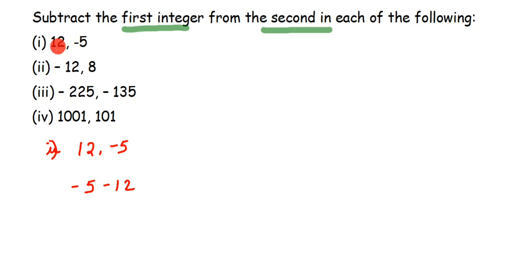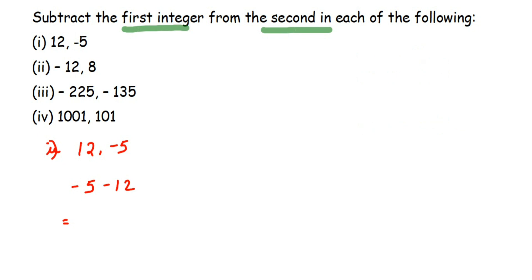Before we solve further, you need to know how to subtract integers. If two numbers have the same sign — minus-minus or plus-plus — you add them, and the sign stays the same. Minus-minus gives a minus in the final answer; plus-plus gives a plus. If you have different signs — plus-minus or minus-plus — you subtract the two integers and the sign will be that of the greater number.